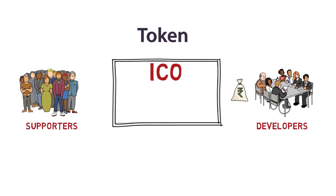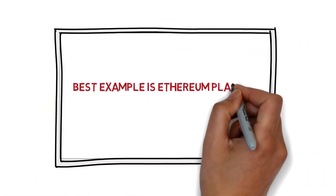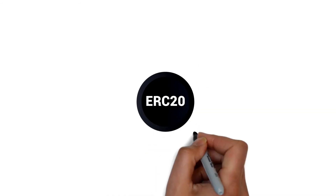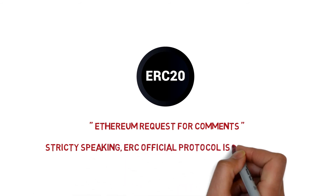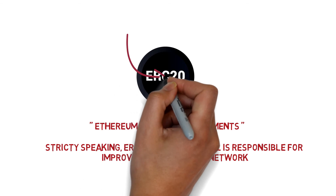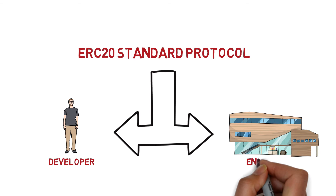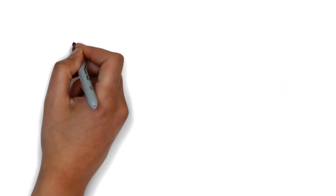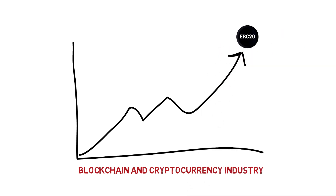This is completely similar to an IPO for stocks. The best example is the Ethereum blockchain, where its token standard ERC20 is used to create almost 40 tokens. ERC20 stands for Ethereum Request for Comments. The ERC official protocol is responsible for improving the Ethereum network, and the number 20 in ERC20 signifies a unique proposal ID. ERC20 standard protocol allows developers and enterprises to tokenize their projects and do crowdfunding in the form of ICOs. Whatever the blockchain and cryptocurrency industry has accomplished, it is possible because of the ERC20 protocol.